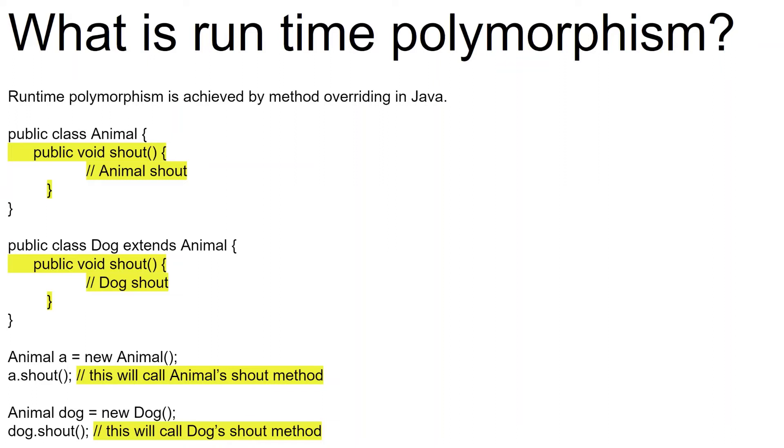So how do we achieve runtime polymorphism? Let's have a look at the example. When we do animal a equal to new animal and we call a dot shout, this will call animal class shout method, because on the right-hand side we created animal object. And if you have a look at the below statement where animal dog equal to new dog, we create the object of type dog. And after that we do dog dot shout. So this will call the dog's shout method. So this is how we achieve runtime polymorphism in Java. Runtime polymorphism is where depending upon the object that we create, the method of that object is called at runtime. So that is the reason it is called runtime polymorphism or dynamic method binding.